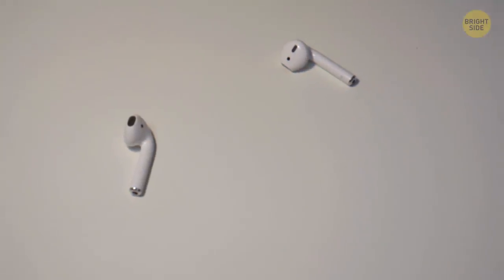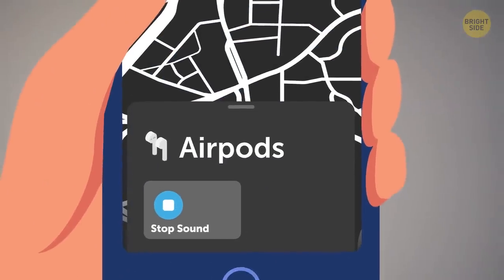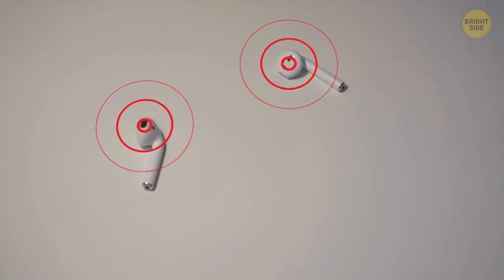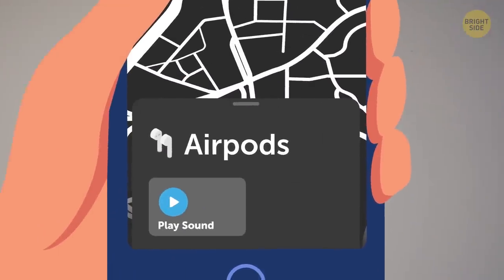Plus, if you know for sure that both of your AirPods are somewhere nearby and connected to Bluetooth, you can play a sound in the application to find them. This sound will last for 2 minutes, getting louder and louder. As soon as you spot the missing earbud, you can tap stop playing.